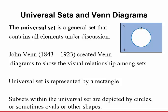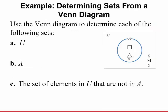Subsets within the universal set are depicted by circles, or sometimes ovals or other shapes. For example, if we're looking at the natural numbers between 1 and 10, and we have set A as the even numbers — 2, 4, 6, 8, 10 — those would be inside the circle, and the odd numbers would be outside that set. Given a simple Venn diagram, we can determine sets from them.